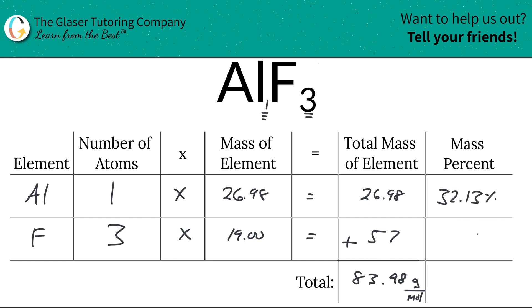So now since we want to find the mass percent of fluorine, all we're simply going to do is take the total mass of fluorine here that we found, 57, and then we're going to simply divide it by the total mass of the entire compound, 83.98, right?